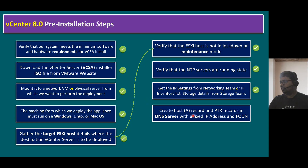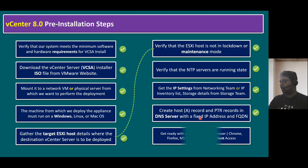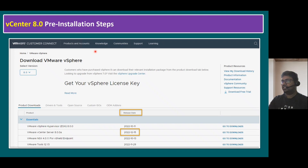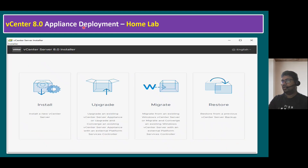That pre-installation step is also completed. Get ready with a supported web browser — Chrome, Firefox, or Edge — for vSphere client access; we're already using Chrome. All pre-installation steps are completed. The VCSA 8.0 latest patch was downloaded from the VMware website last week. During appliance deployment, we have four options: install, upgrade, migrate, and restore. In our scenario, we are using the first option — installing a new vCenter server.